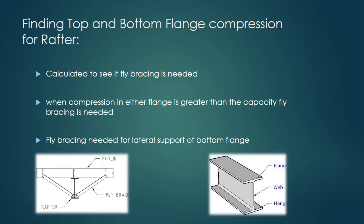Finding top and bottom flange compression for rafter. Finding the compression in the top and bottom flange was done to see if any fly bracing was needed. For the top flange, the compression value was well within the capacity of the member, whereas the compression experienced in the bottom flange was greater than the capacity of the member, and therefore fly bracing was needed to restrain the bottom flange laterally. Note, it is important to find how much fly bracing is needed to support the compressive loads of the rafter so that the member can resist the compressive forces.